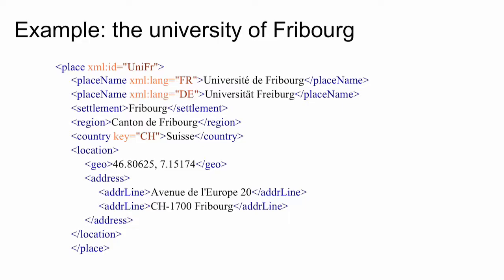Let's see how we could describe the University of Fribourg in Switzerland. We have the place element, and inside it we have two different place names, because Fribourg is a bilingual place — so you have the French and German-speaking versions: Université de Fribourg and Universität Freiburg. Then we describe the location, giving the settlement — a city — where it is located, which is Fribourg, and the region, the wider political unit, which is the Canton de Fribourg, and the country, Switzerland.